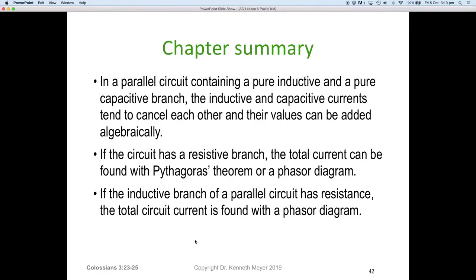So let's summarize now. This is a summary of all the lessons for lesson five. Our chapter summary: In a parallel circuit containing pure inductive and pure capacitive branch, the inductive and capacitive currents tend to cancel each other out and their values can be added algebraically.